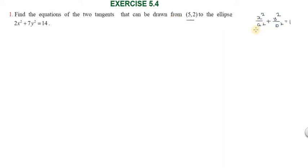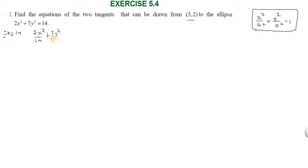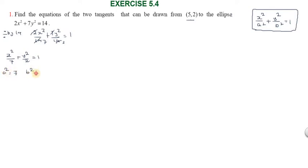The standard general equation of an ellipse is x²/a² + y²/b² = 1. So we divide the equation by 14: 2x²/14 + 7y²/14 = 14/14, giving us x²/7 + y²/2 = 1. So a² = 7 and b² = 2.